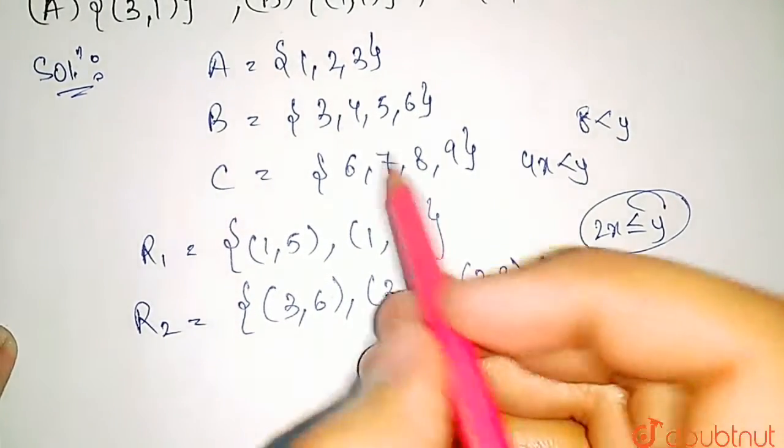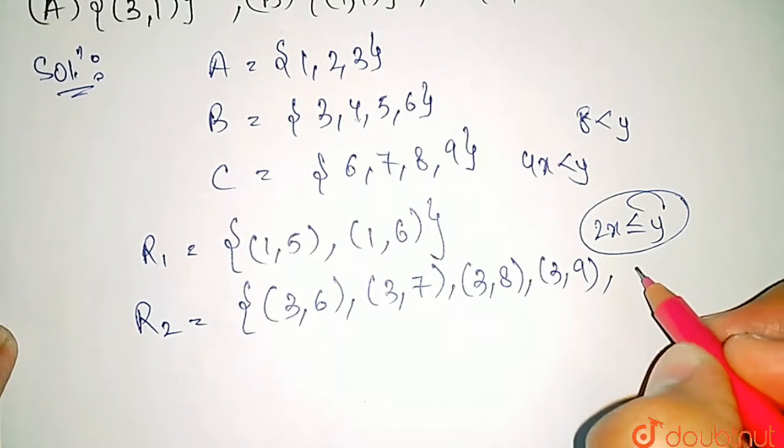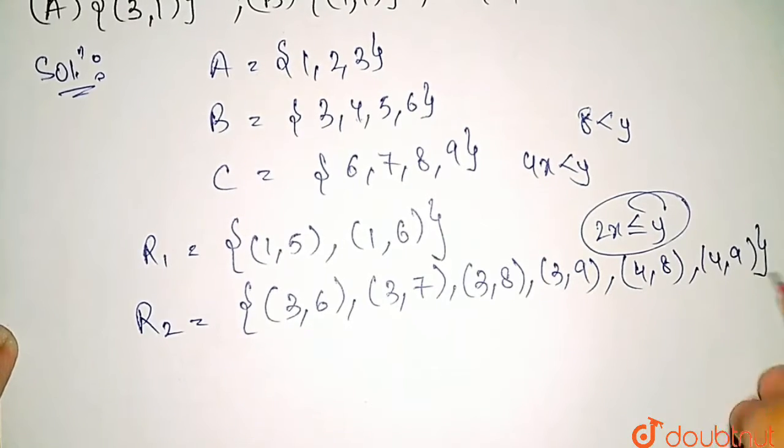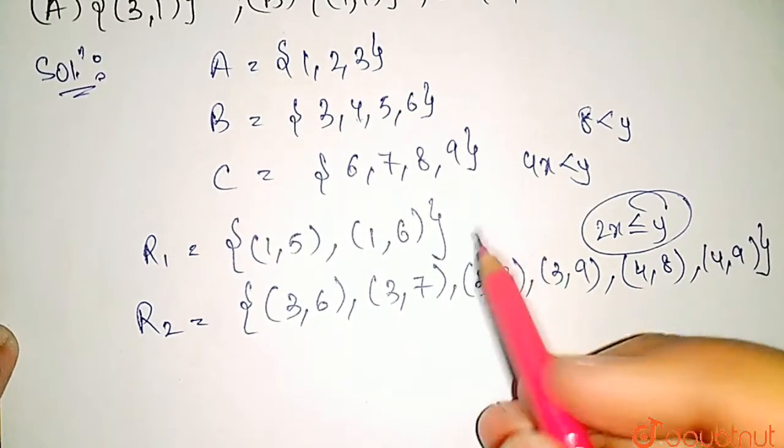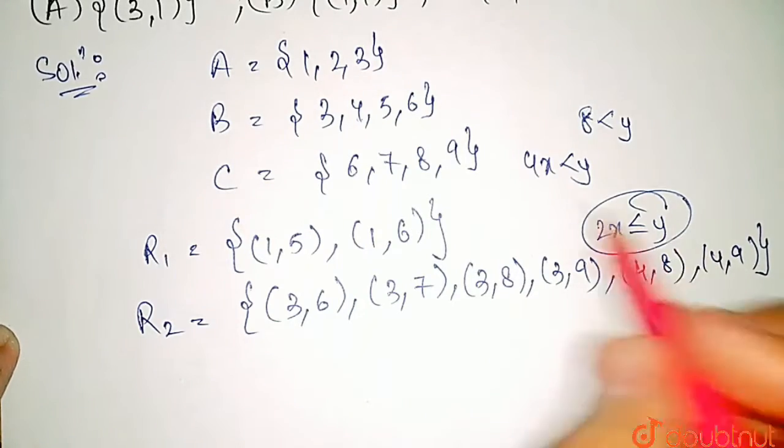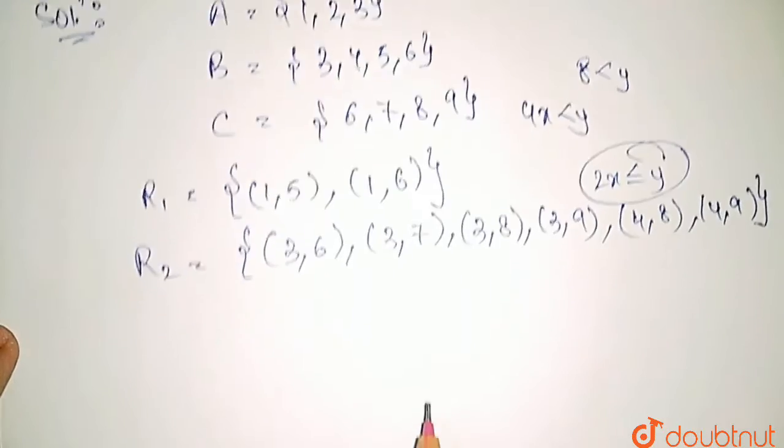Similarly, if we take x equals 4, then 2x would be 8. So the pair would be (4,8) and (4,9). Now if we take x equals 5, then 2x would become 10. So there is no y in C which is greater than or equal to 10. So these are the elements of R2.